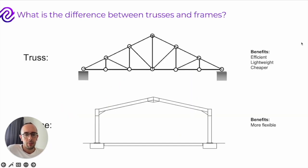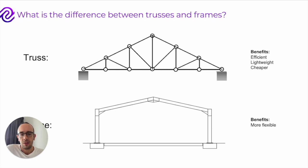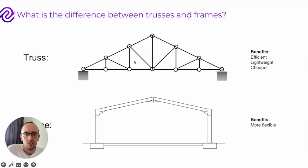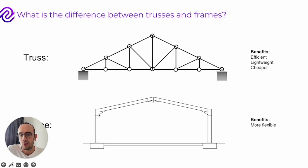Quite often people get confused between the difference between trusses and frames. What you see here at the top is a truss, at the bottom is a frame. There are some pretty big differences between the two. Lots of trusses you'll see arranged in triangular patterns. The reason for this is because trusses do not transfer bending moments or shear forces at their joints. Frames on the other hand can transfer moments and shear forces at their joints.